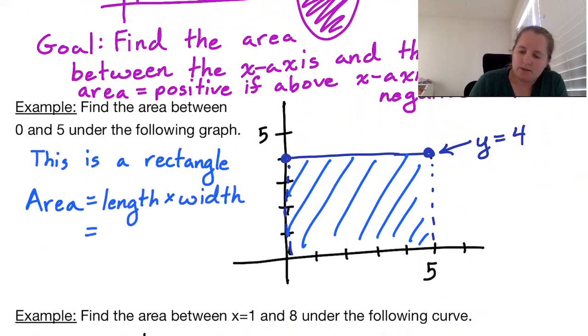We have distance 5 and distance 4. So our area is just 5 times 4 or 20.